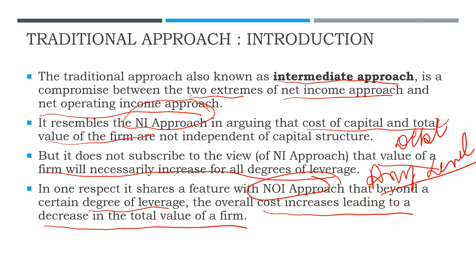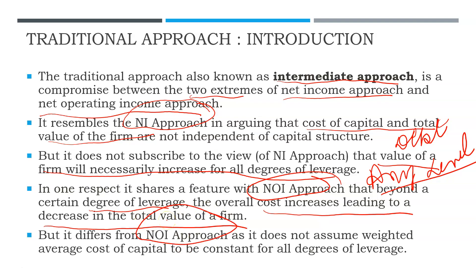The NOI approach said that beyond a certain level, the overall cost of capital increases, causing the value of the firm to decline. But this theory also differs from NOI because in NOI, the overall weighted average cost of capital using different sources of finance - mainly debt and equity - remains constant. In this theory, it does not remain constant. So up to a certain degree of leverage, the overall cost of capital declines and value of firm increases, but after that level, overall cost of capital increases and value of firm declines.